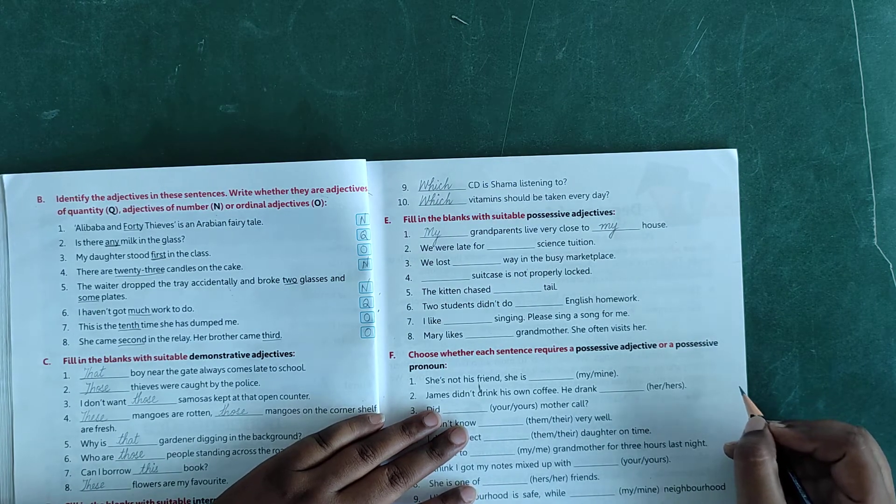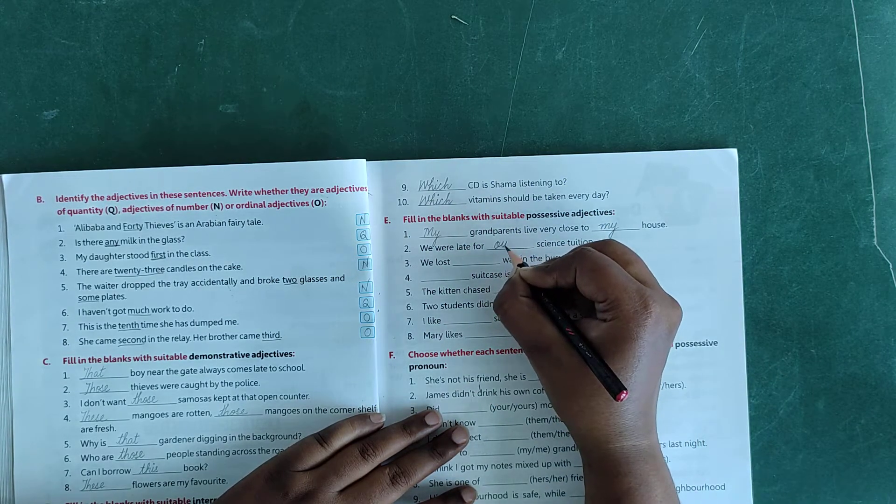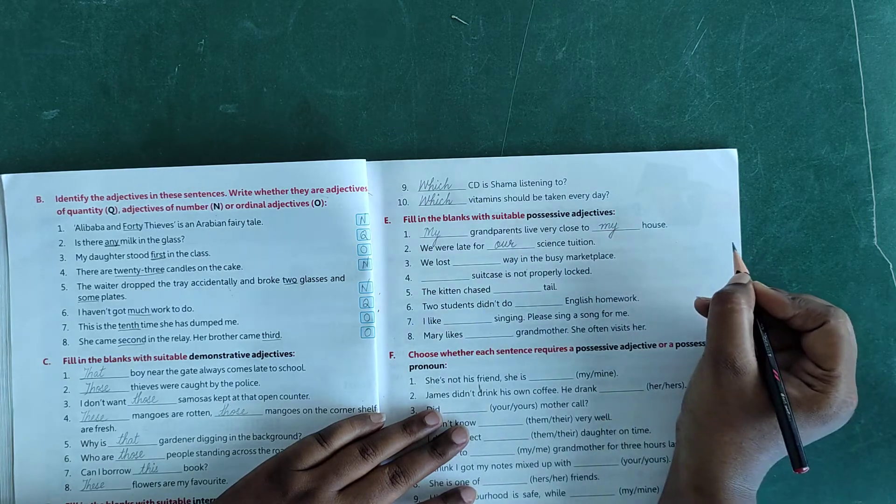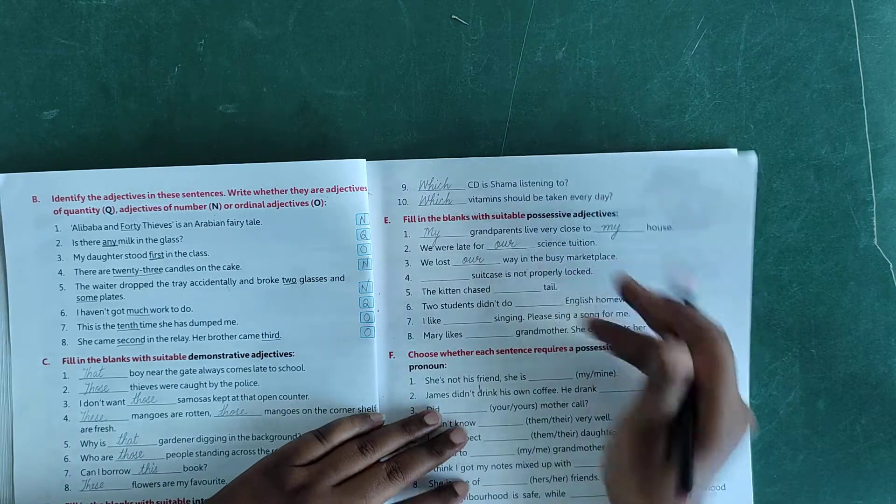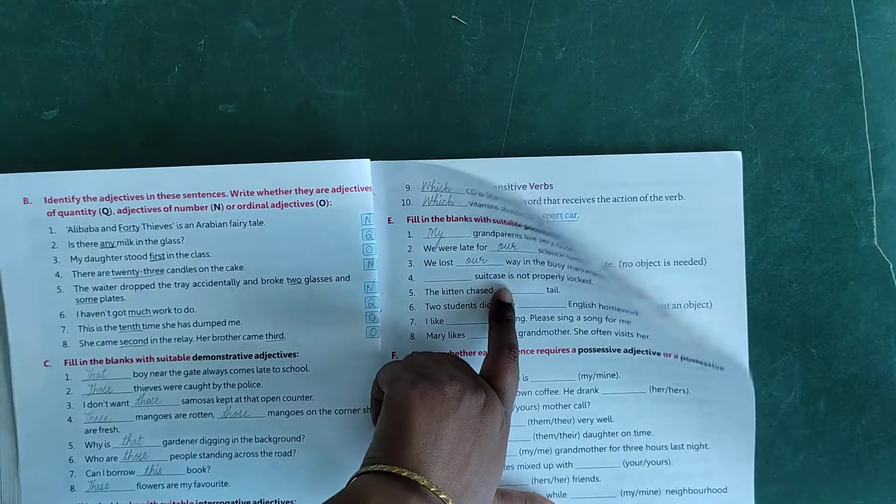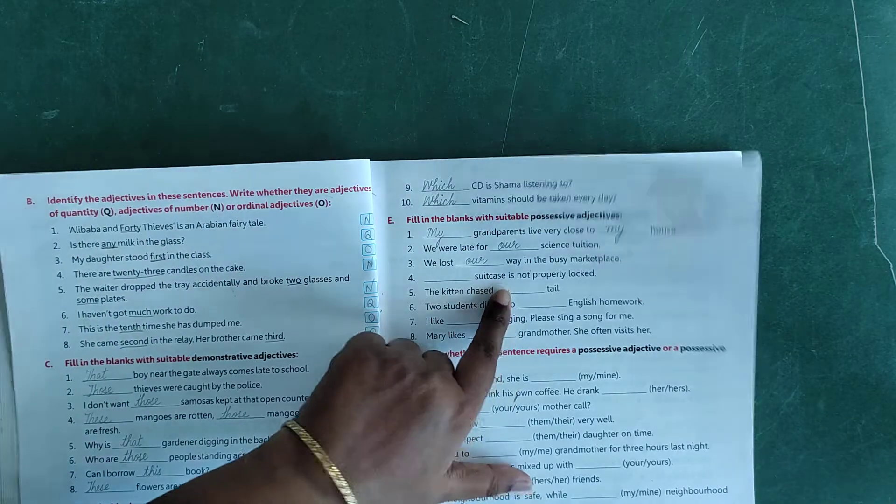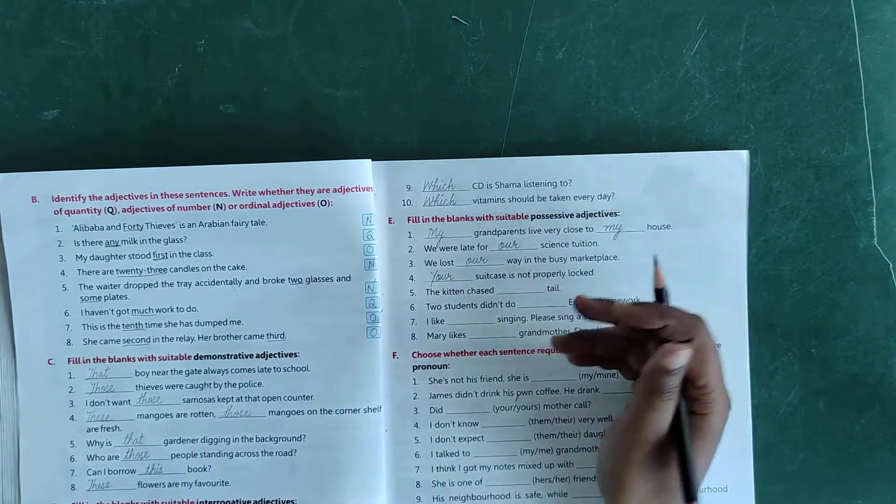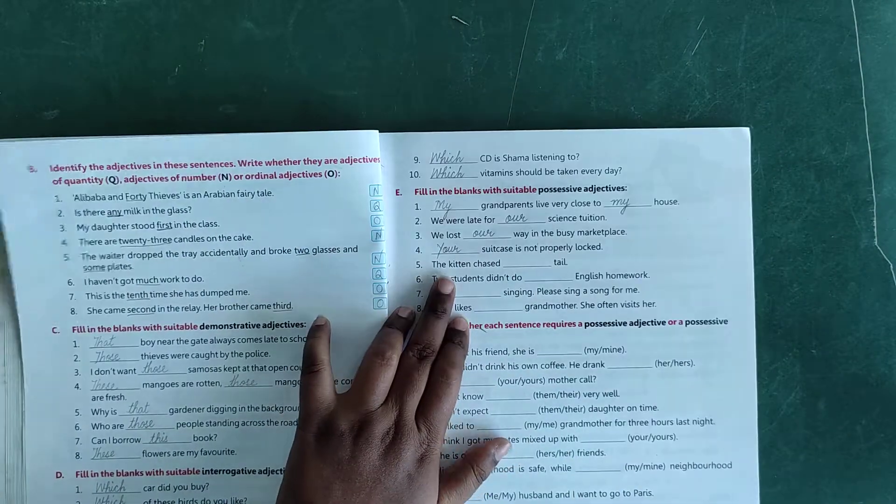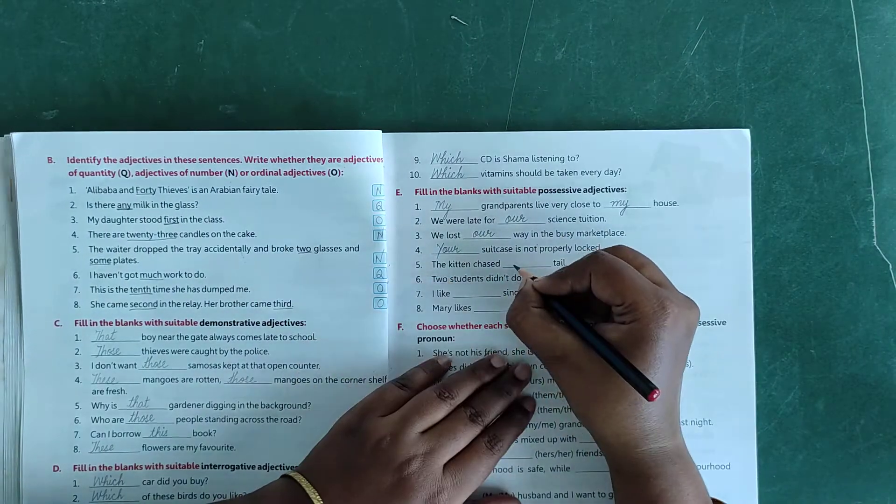Number 2: we were late for dash science tuition - our science tuition. Number 3: we lost dash way in the busy marketplace - we lost our way. Number 4: dash suitcase is not properly locked - your suitcase is not properly locked.